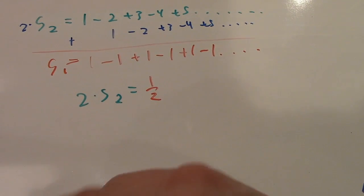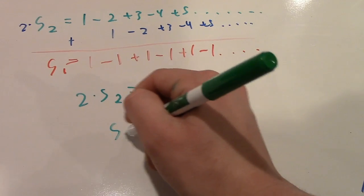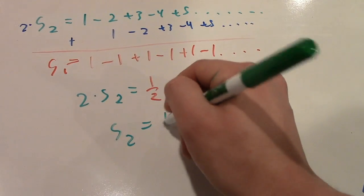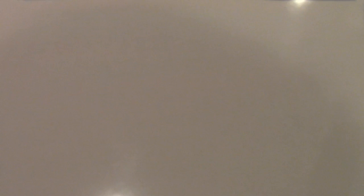So, if we just divide both sides by 2, we show that our second sum is equal to 1 fourth. Now that we know that our second sum is equal to 1 fourth, we can finally figure out this madness that is our main sum equaling negative 1 twelfth.